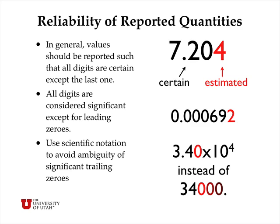Now let's turn to the reliability of reported quantities and how to deal with significant figures. In general, values should be reported such that all digits are absolutely certain except for the last one. For example, if a quantity is 7.20, the 7 and the 2 are certain, and the last digit (0) is estimated and might be off by one or two digits. All digits in a number are considered significant except for leading zeros. For instance, in 0.000692, the leading zeros don't count — only the 6, 9, and 2 are significant, giving three significant figures.